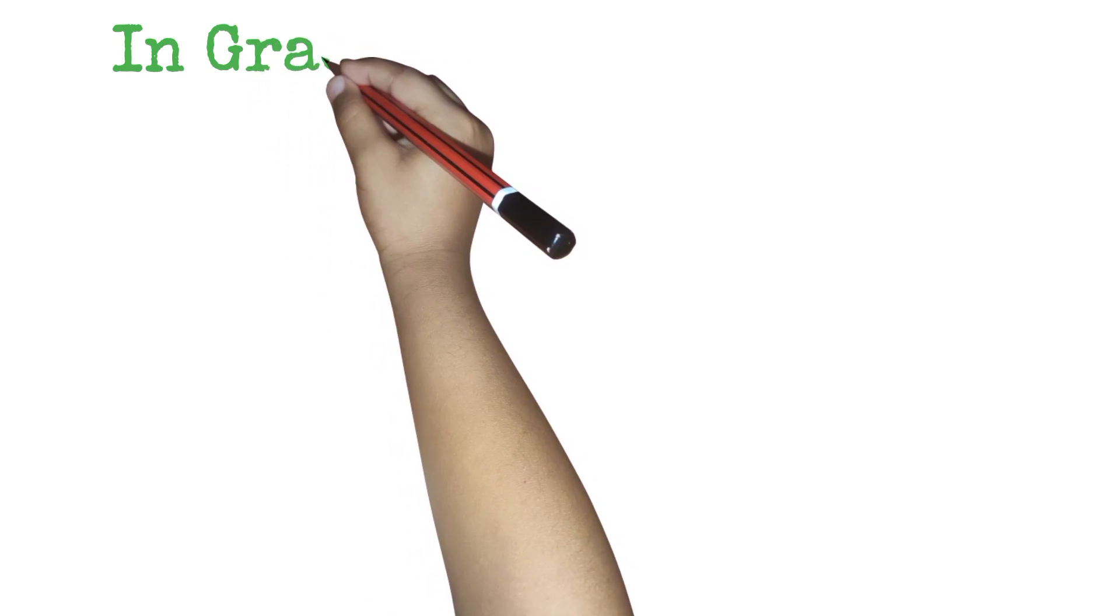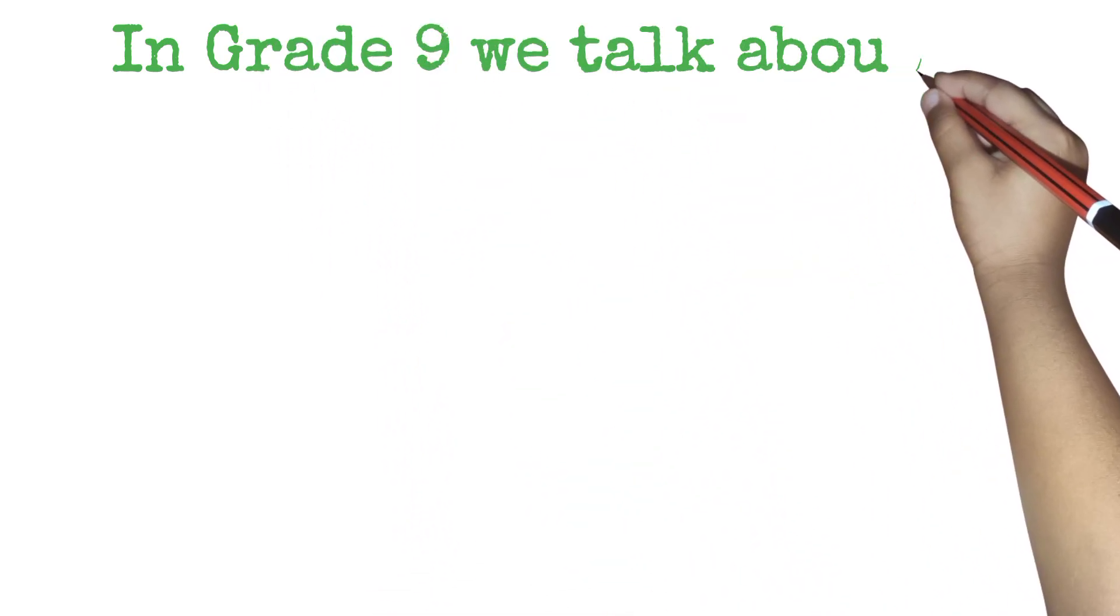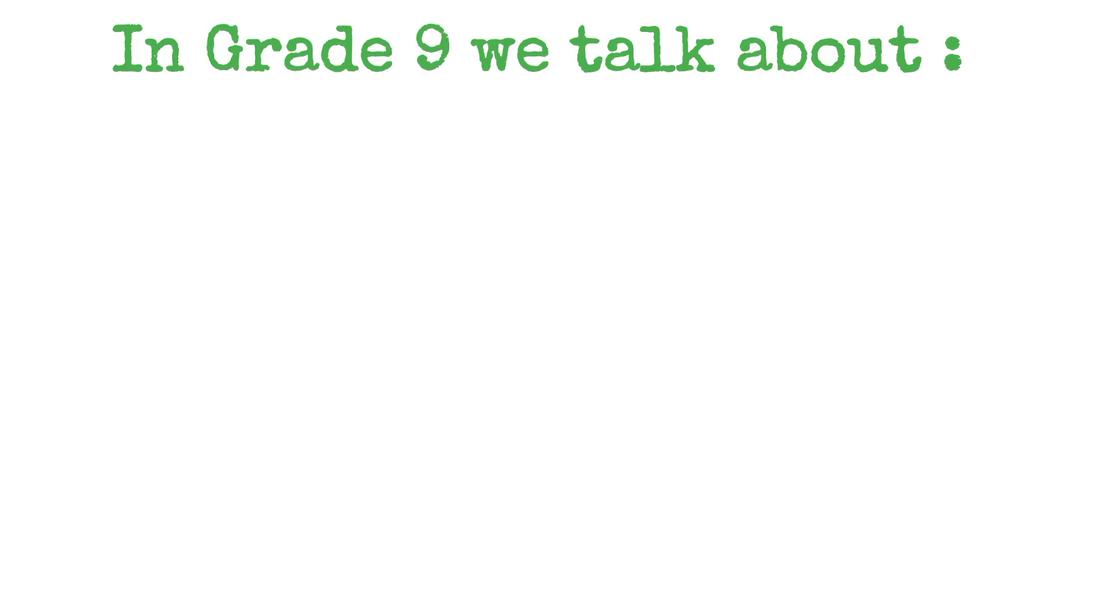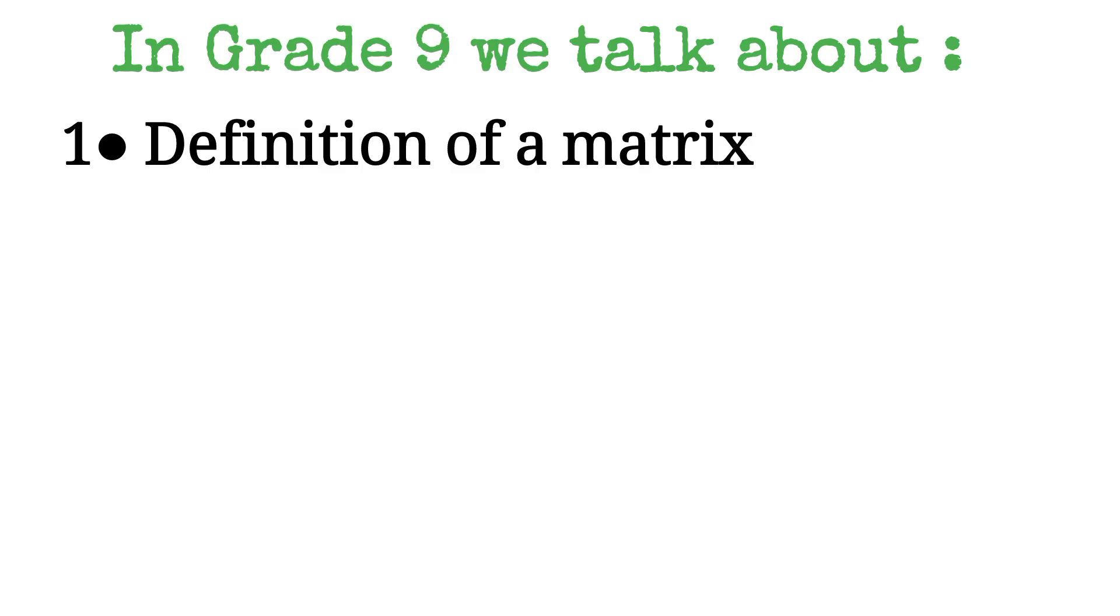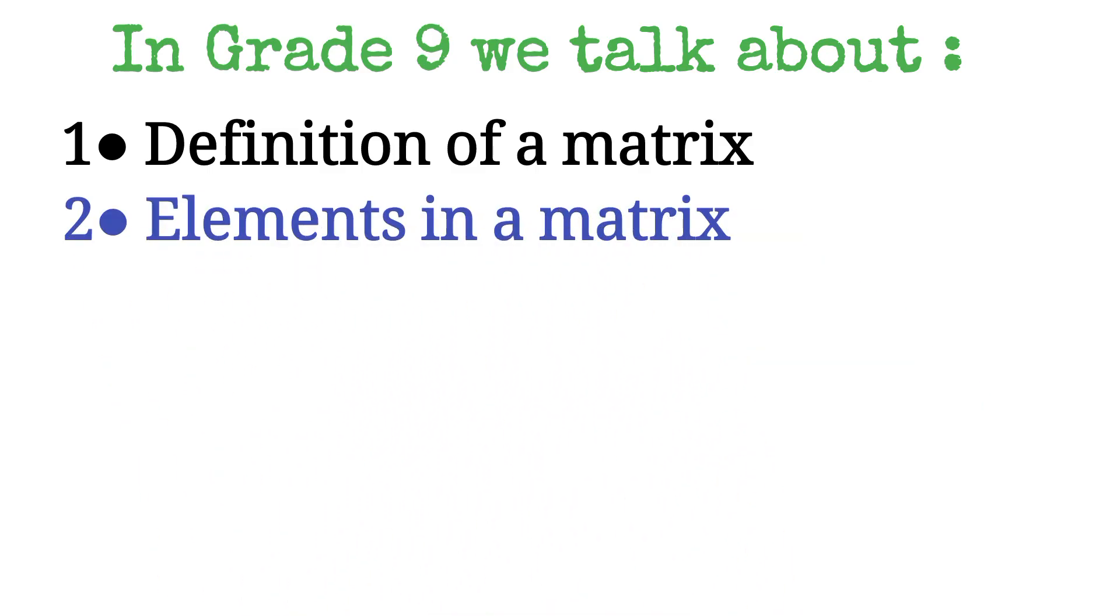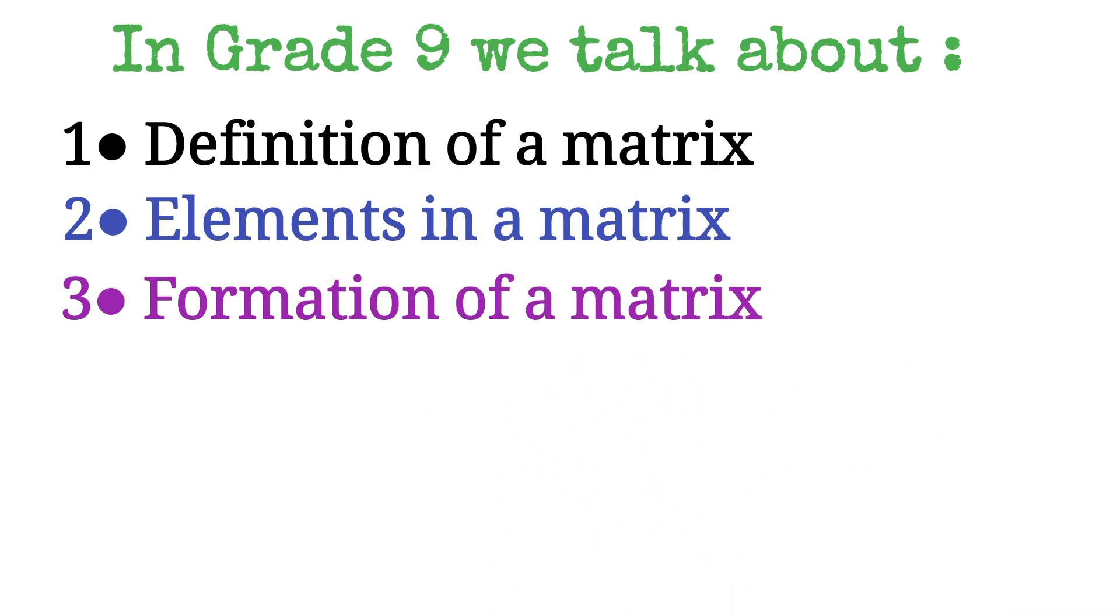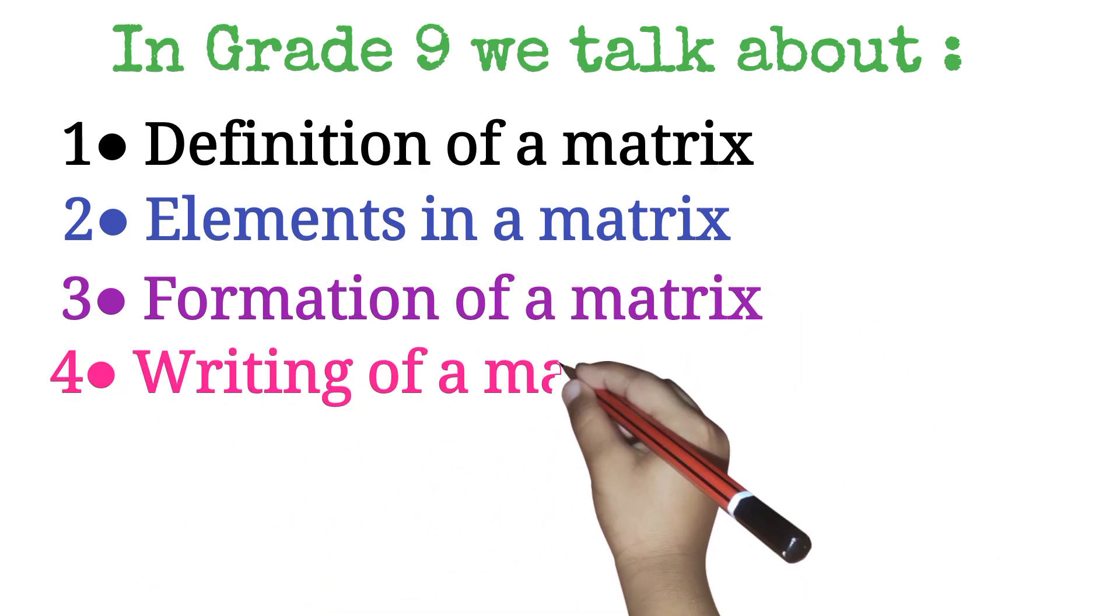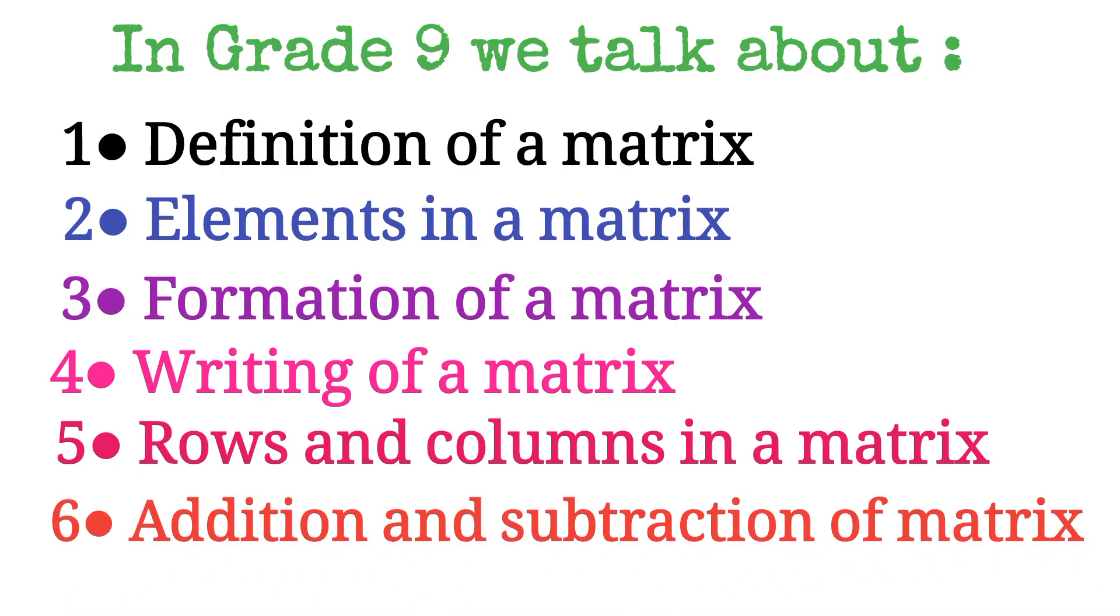In grade 9 we talk about: number 1, definition of a matrix; number 2, elements in a matrix; number 3, formation of a matrix; number 4, writing of a matrix; number 5, rows and columns in a matrix; and number 6, addition and subtraction of matrix.